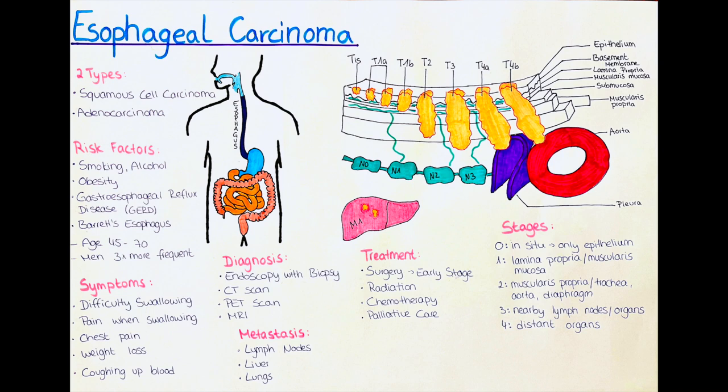Prevention of carcinoma of the esophagus involves avoiding risk factors such as tobacco use and heavy alcohol consumption. Eating a healthy diet, maintaining a healthy weight, and managing conditions such as gastroesophageal reflux disease and Barrett's esophagus may also reduce the risk of developing esophageal carcinoma.